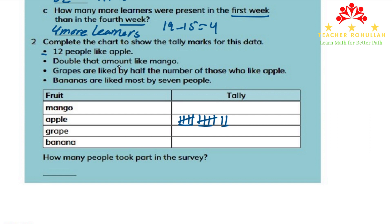The second part says double that amount liked mango. Mango is in the second row. Double 12 means 12 plus 12, or 2 times 12, which is 24. So 24 people like mango. To record it in the chart we use tally marks: 5, 10, 15, 20, then 21, 22, 23, 24. It shows that 24 people liked mango.